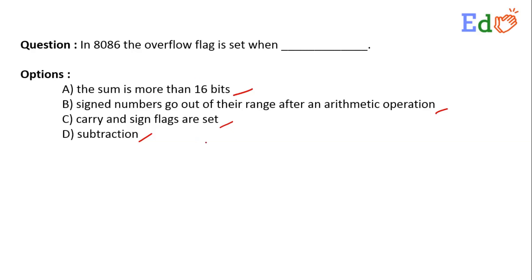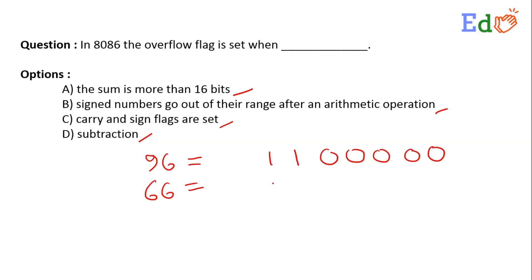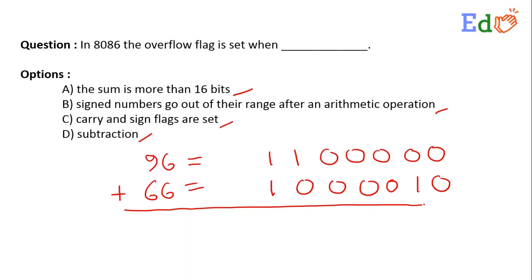For example, if I take the number 96 and convert it to binary I get 1 1 0 0 0 0 0 0, and I have another number 66 which is 1 0 0 0 0 1 0. Now I want to add 96 with 66.